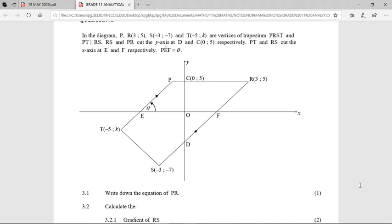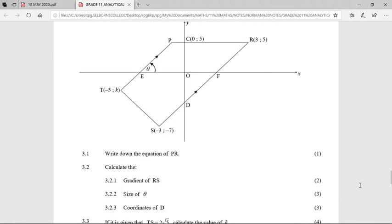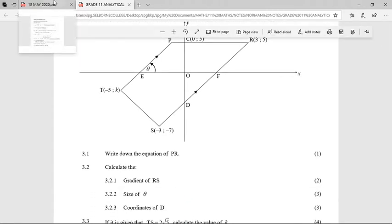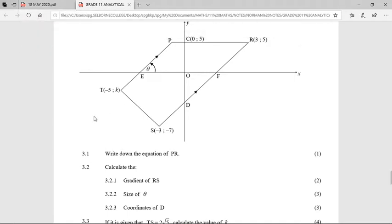RS and PR cut the y-axis at D and C, which was 0 and 5, respectively. PT and RS cut the x-axis at E and F, respectively. Also, they tell you that PEF forms angle theta. You should straight away be thinking tan theta equals inclination of the line because that's new in grade 11. So going to the question, and as always, I'm just going to float between the memo and the question paper.